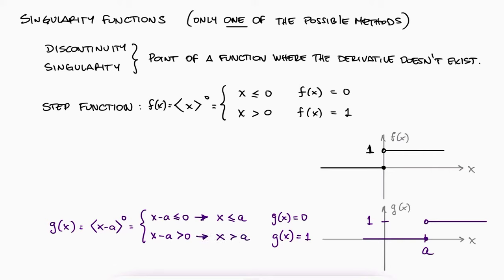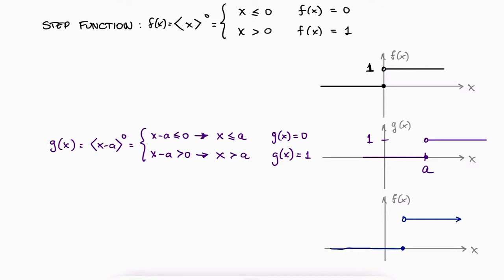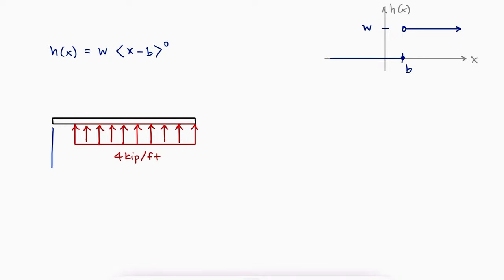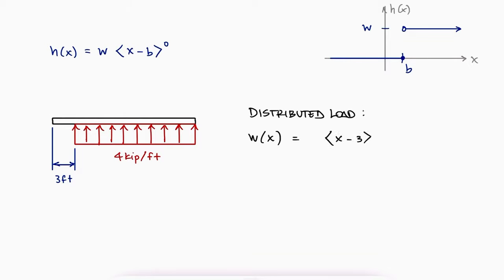Additionally, from basic algebra, if we want the function to be not just zero or one, but zero or any amplitude w, we can multiply the brackets by w. This way the function goes from zero to w instead of zero to one. You can already imagine how this is helpful for distributed loads. If we have a distributed load of 4 kip per foot starting at 3 feet from the left, we would write w(x) as a step function that begins at 3 and has a magnitude of 4 kip per foot.